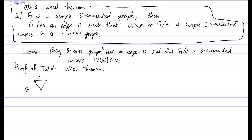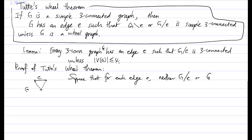Furthermore, let's assume that for every edge, neither G-contract-E nor G-delete-E is simply 3-connected. We can do that, otherwise we are done.